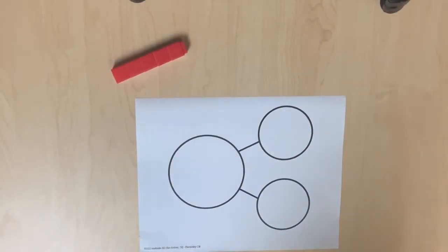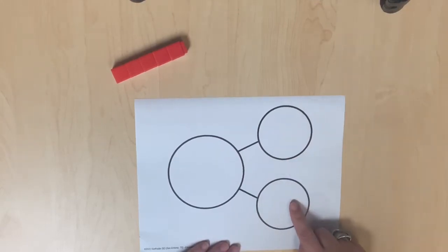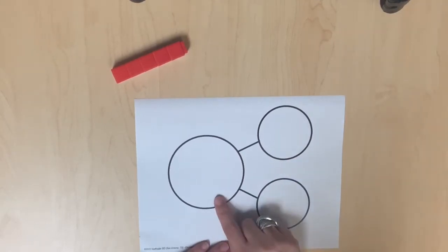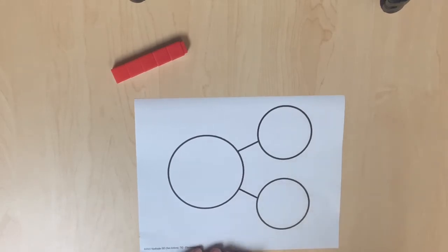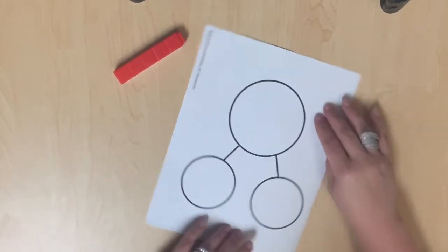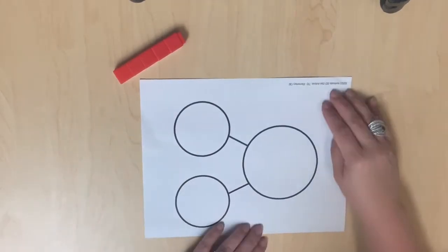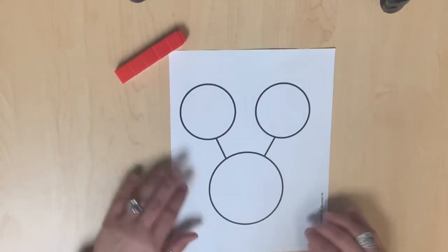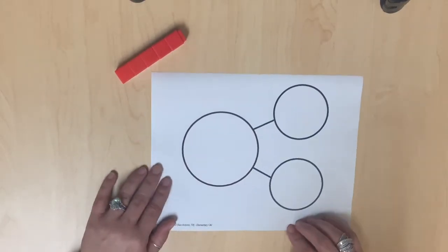Number bonds are a tool that can be used to represent how numbers can be composed and decomposed. Two circles represent the parts, and another larger circle represents the whole. Number bonds can be oriented in various ways. Students should understand the relationship between the parts and the whole, regardless of orientation.